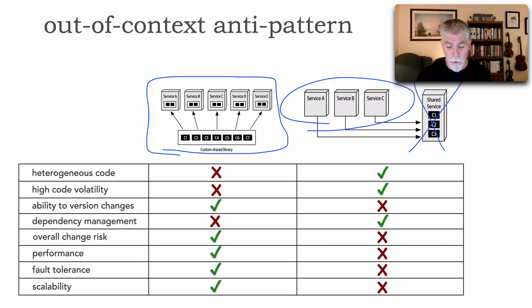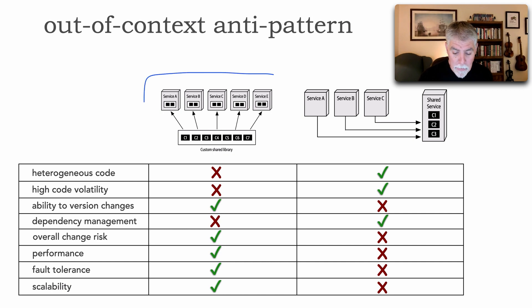As a matter of fact going back to the performance piece this is a method call right here. And finally the scalability, because this is compile bound my services can independently scale along with that shared functionality. But here if my services started to scale up I'd have to correspondingly increase the scalability of my shared service. And so operationally the shared library becomes a little bit better option.